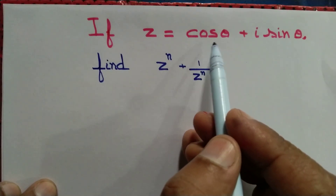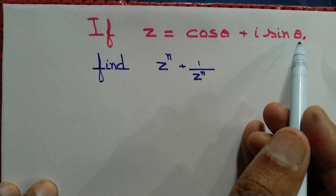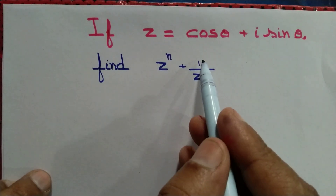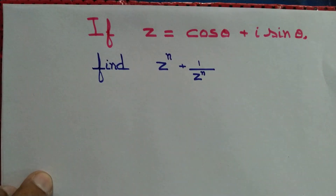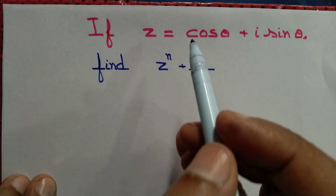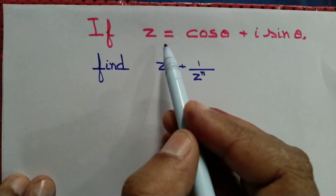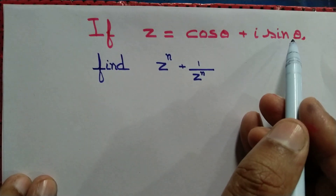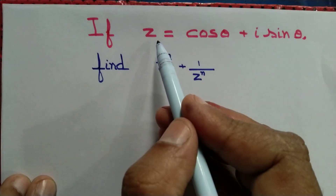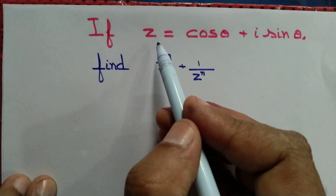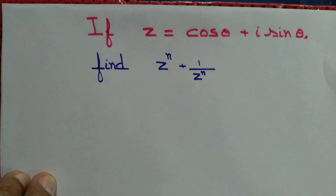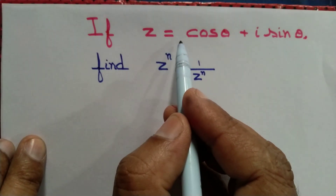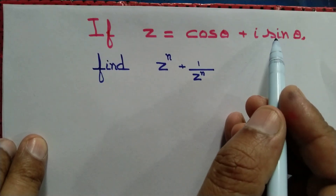If z equals cos θ plus i sin θ, let us find the value of z to the power n plus 1 by z to the power n. We have two choices: we compute z to the power n by applying the binomial theorem, or we apply De Moivre's theorem. It is much easier to do by applying De Moivre's theorem.